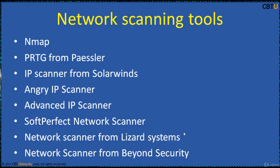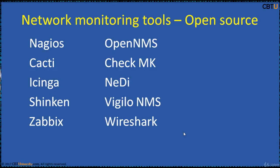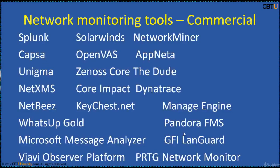These are some of the popular network scanning tools. We have many multipurpose tools which do scanning, monitoring, analysis, and remediation for vulnerabilities as well. These are the open source network monitoring tools: Nagios, Cacti, Icinga, Shinken, Zabbix, OpenNMS, etc.